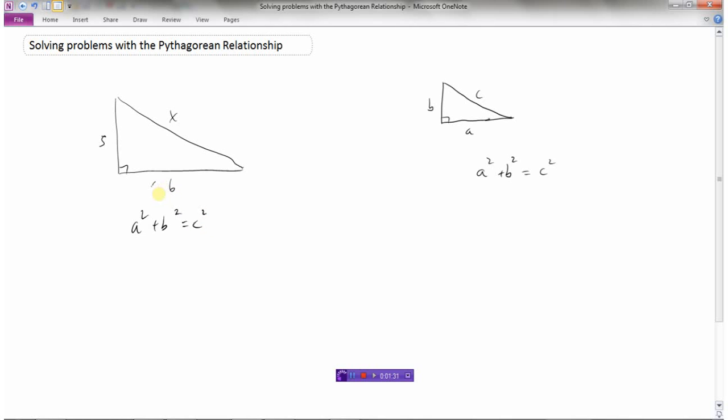So I'm going to say that this side is a, this side is b, and my hypotenuse is c, the long side. So this would be six squared plus five squared equals, and I'm calling this x, so x squared.